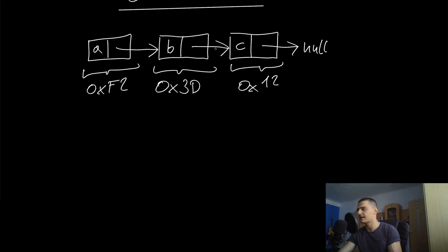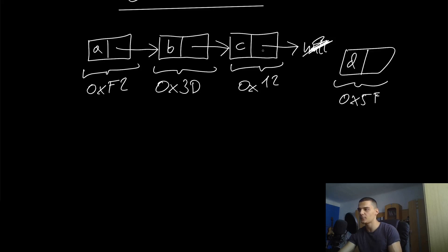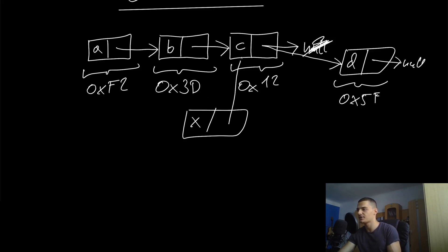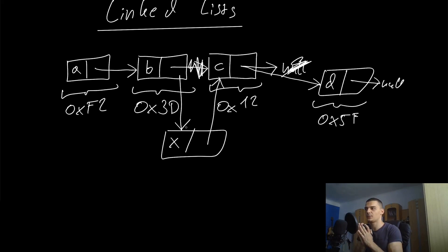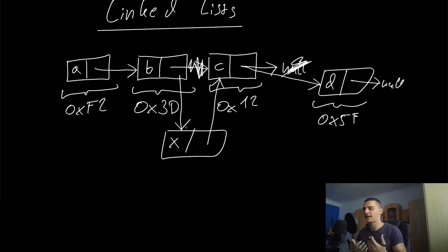Appending an element means creating a new node, allocating new memory — say at 0x5f — then readjusting the tail pointer so C points to D and D points to null. You can also insert a new node X between B and C by pointing X to C and updating B to point to X. The size increases dynamically because we're not allocating a fixed-size memory block. As long as there is memory available, we can add as many elements as we want. This is a dynamic data structure spread across memory but connected by pointers.